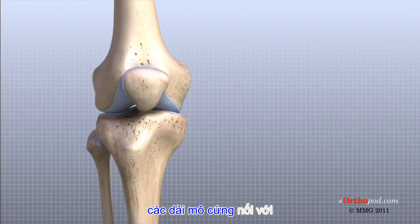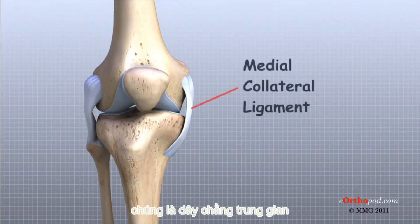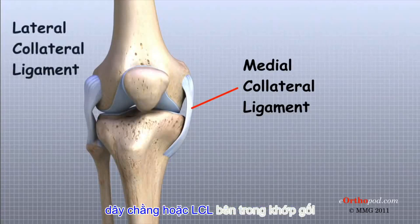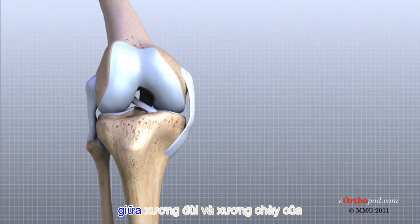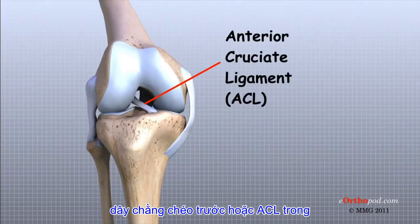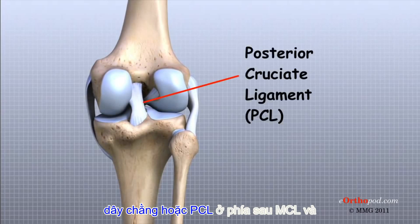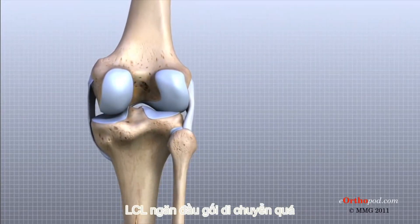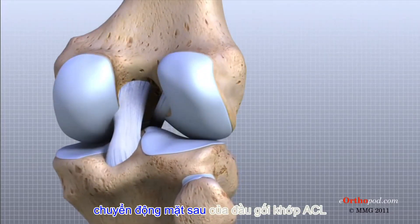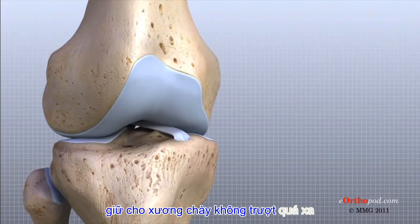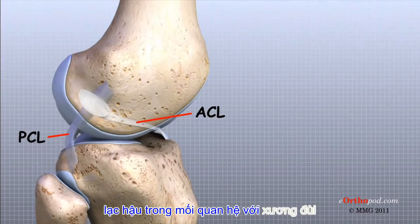Ligaments are tough bands of tissue that connect the ends of bones together. Two important ligaments are found on either side of the knee joint: the medial collateral ligament or MCL, and the lateral collateral ligament or LCL. Inside the knee joint, two other important ligaments stretch between the femur and the tibia — the anterior cruciate ligament or ACL in front, and the posterior cruciate ligament or PCL in the back. The MCL and LCL prevent the knee from moving too far in the side-to-side direction, while the ACL keeps the tibia from sliding too far forward and the PCL keeps the tibia from sliding too far backward in relation to the femur.